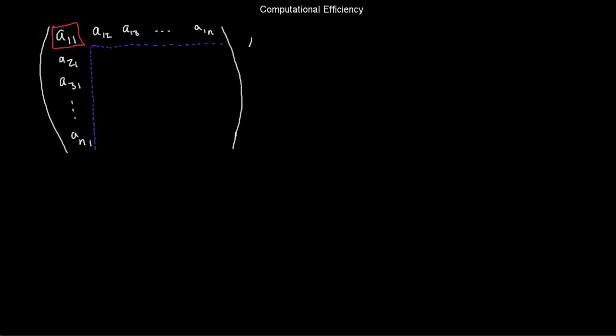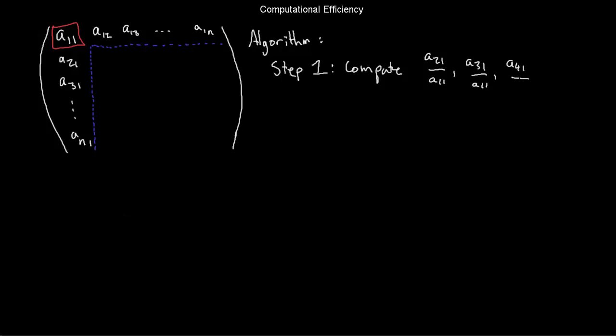Let's start with our setup. Here I have my generic n-by-n matrix. I'm assuming that my matrix is regular, so this first pivot a₁₁ is definitely not zero. The first step of my algorithm is to compute a₂₁ divided by a₁₁, a₃₁ divided by a₁₁, a₄₁ divided by a₁₁, and so on, all the way down to aₙ₁ divided by a₁₁. Division is multiplication, so this is exactly n−1 multiplication-type operations.